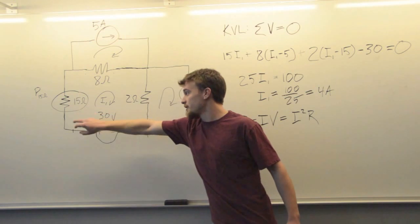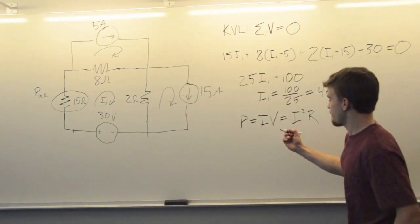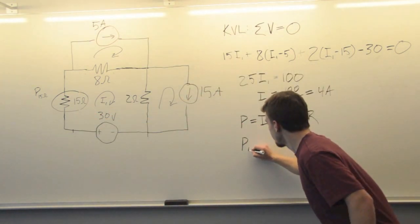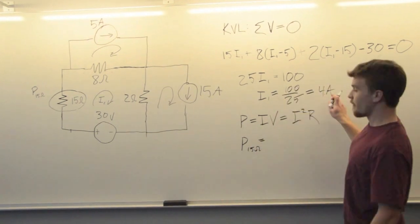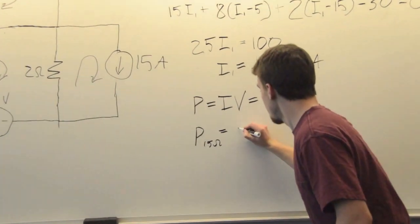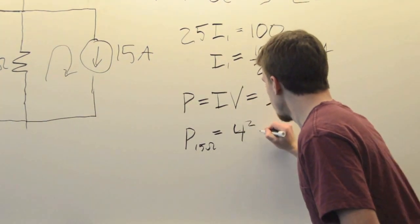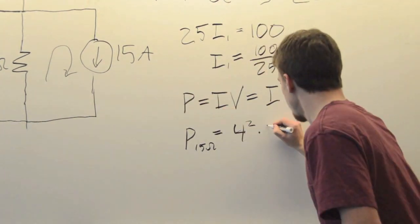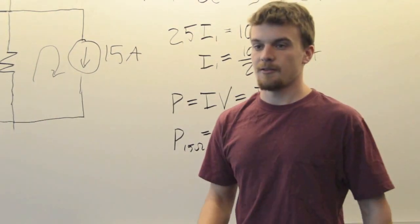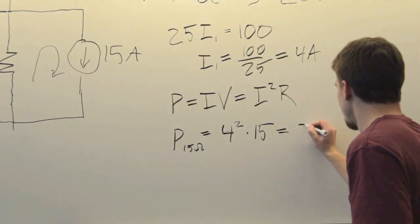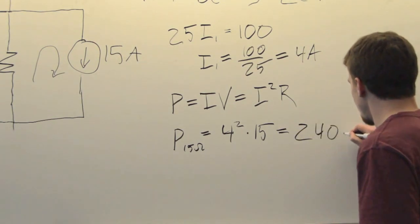And power in the 15 ohm resistor is equal to 4 amps squared times 15, which is equal to 240 watts.